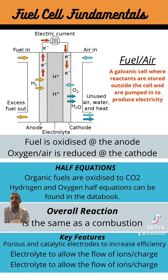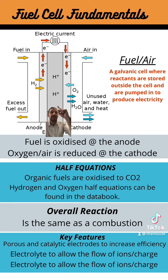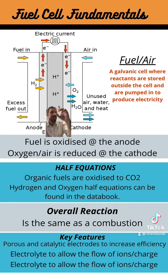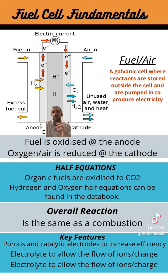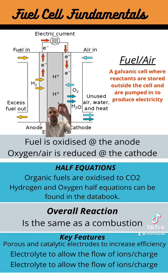One thing to be careful about when writing these reactions is the electrolyte you're using. It might be an acidic electrolyte, like the one in this example here, or it might have OH, which would make it alkaline. There are a couple of other electrolytes, like a solid oxide one, but you've got to be careful when writing half equations that you're balancing the charges using the ions from your electrolyte.